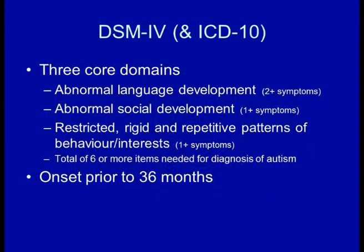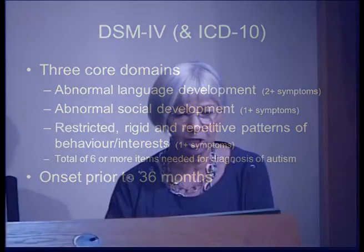Jo touched on the fact that there's going to be a change in the criteria for autism, probably from next year, although people are still arguing about it, so it's not absolutely written in stone yet. As most people know, autism is currently diagnosed on the basis of three core domains: abnormal language development, abnormal social development, and restricted and repetitive patterns of behaviour. That's going to change with DSM, the Diagnostic and Statistical Manual used in the States.